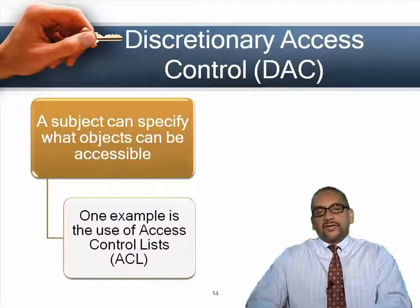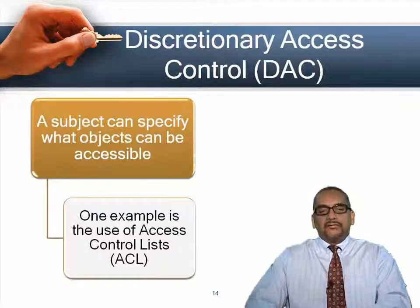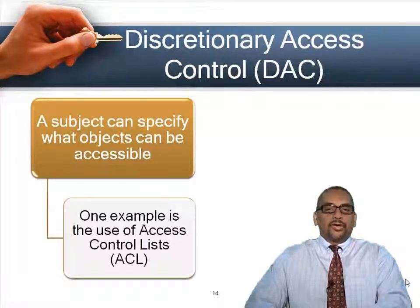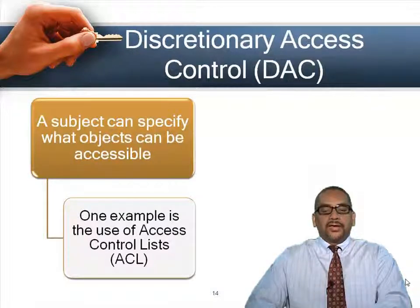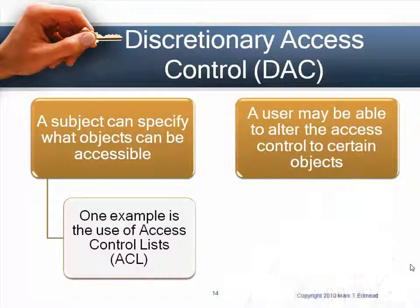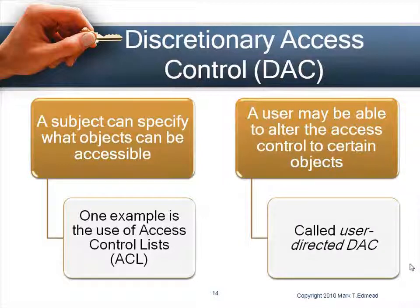In Windows, for example, right-clicking a file and viewing properties shows the access control list where the owner or administrator can assign full access, read-only, or no access to different users. On firewalls, the firewall rules are an access control list defining who can do what. Users can also alter access to certain objects — that is called user-directed discretionary access control.